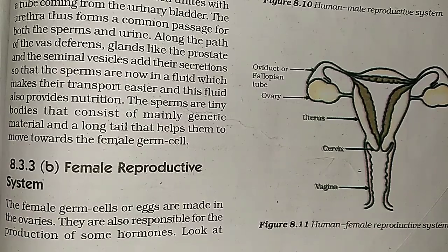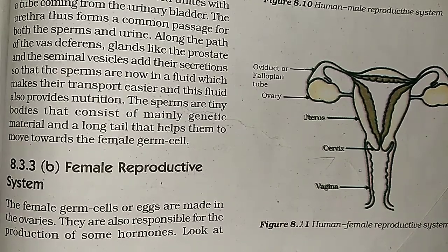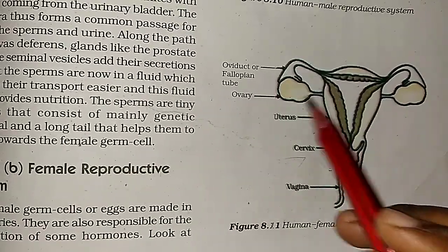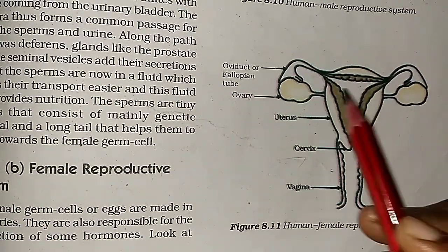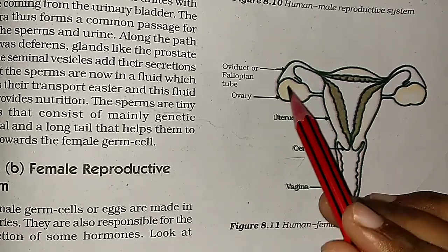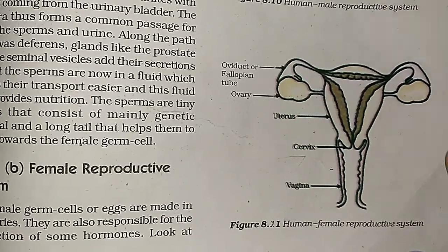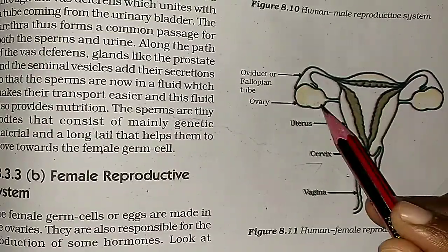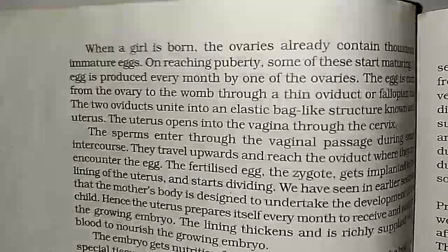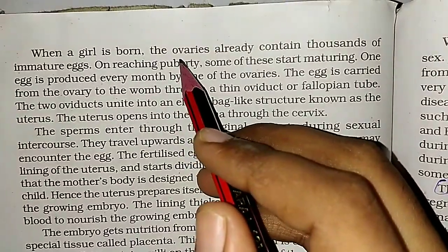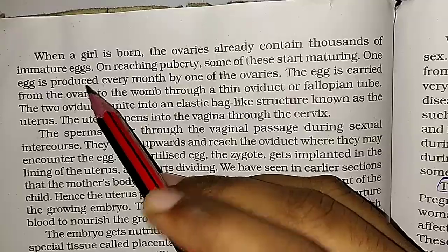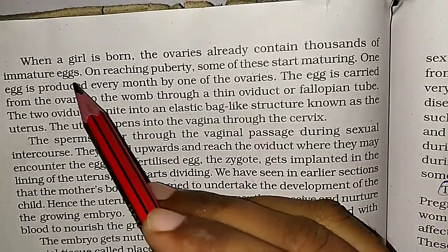The female germ cells, which we call eggs, are made in the ovaries. They are also responsible for the production of some hormones. When a girl is born, the ovaries already contain thousands of immature eggs.